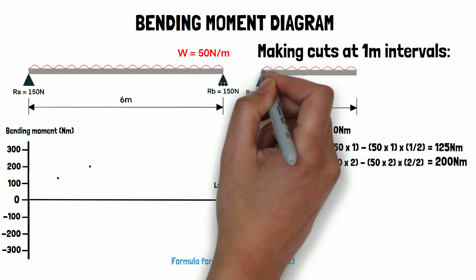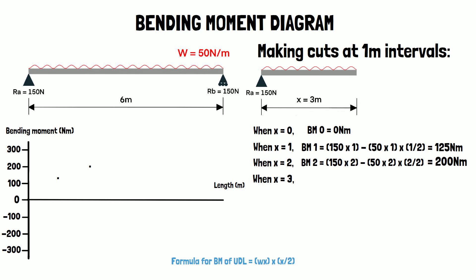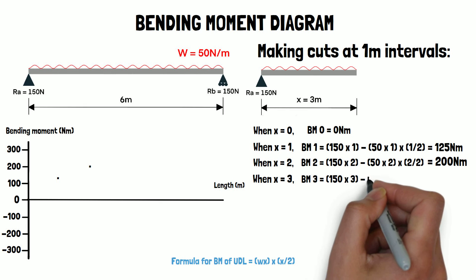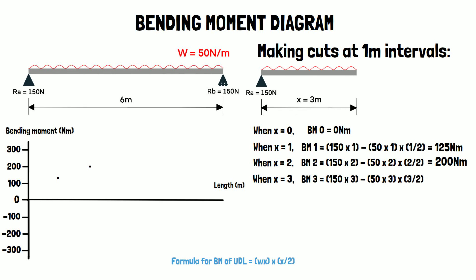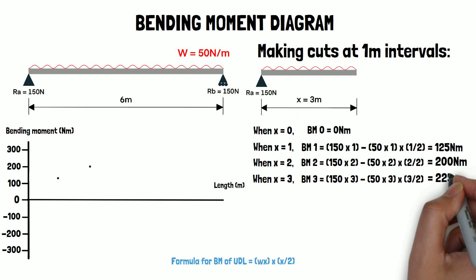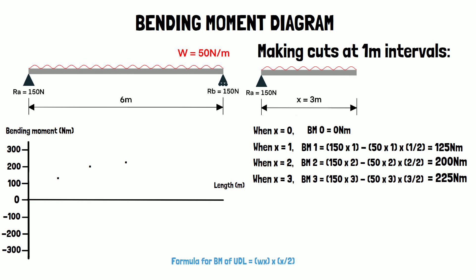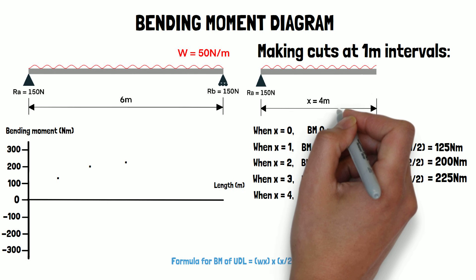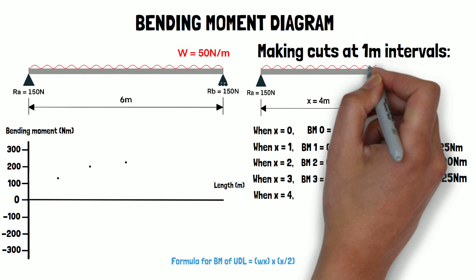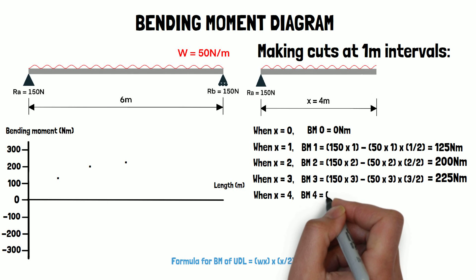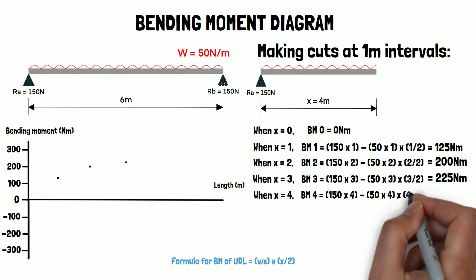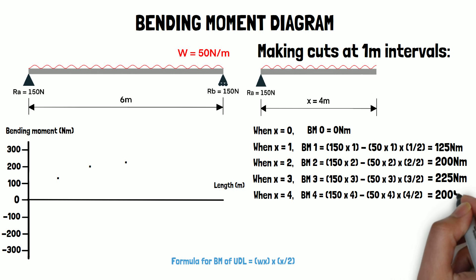When x equals 3, the bending moment is 150 times 3 minus 50 times 3 times 3 over 2, which equals 225 newton meters. When x equals 4, the bending moment is 150 times 4 minus 50 times 4 times 4 over 2, which equals 200 newton meters.